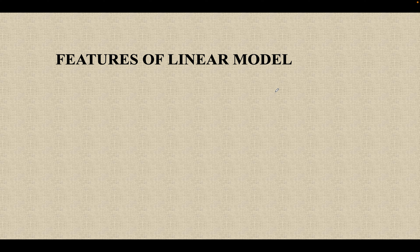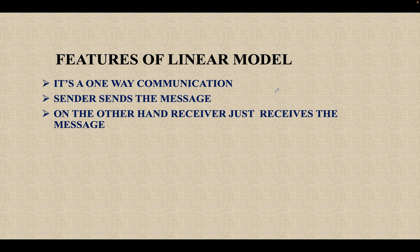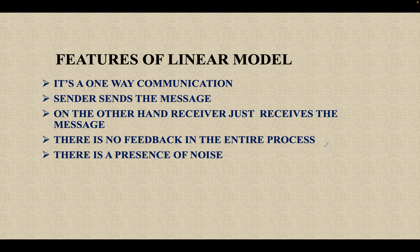Now let's understand the features of the linear communication model. First, it is a one-way communication — the sender sends a message and the receiver just receives it. There is no feedback in the entire process; the receiver is not responding or reverting. Last, there is a presence of noise — when the sender is sending the message, there are multiple distractions which take place, and that can be considered as noise.